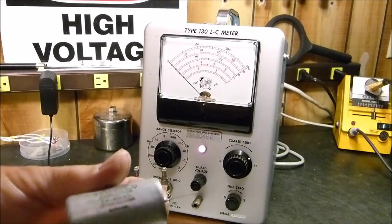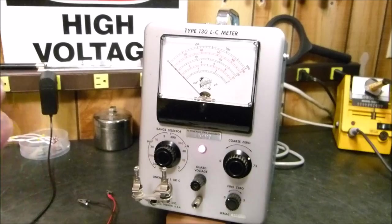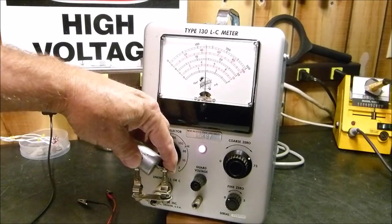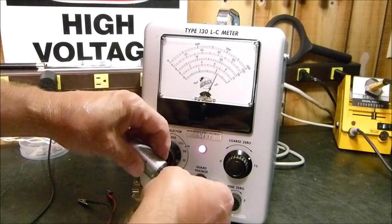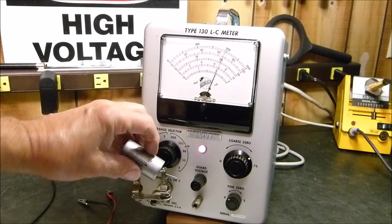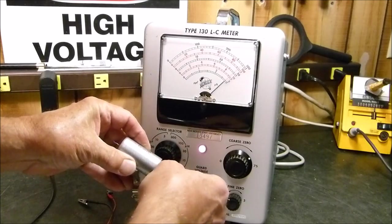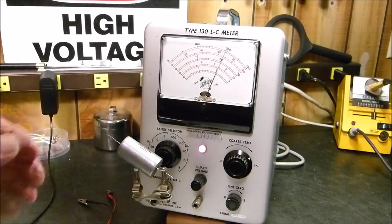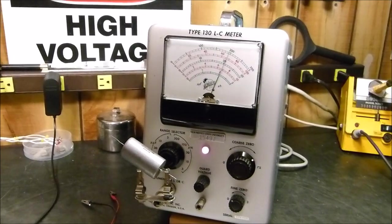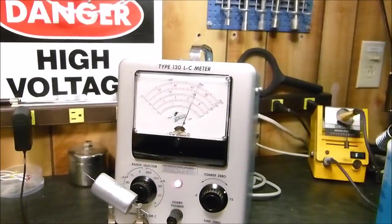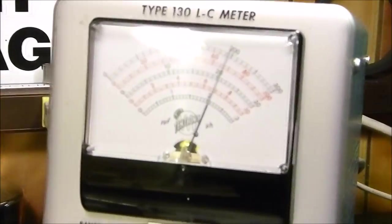Let's take this guy right here, this is a one microfarad. If we put it here, this is the hot lead and then we put the other one to the ground side. You can see that is measuring about 65, 68 picofarads of shunt capacitance to ground.